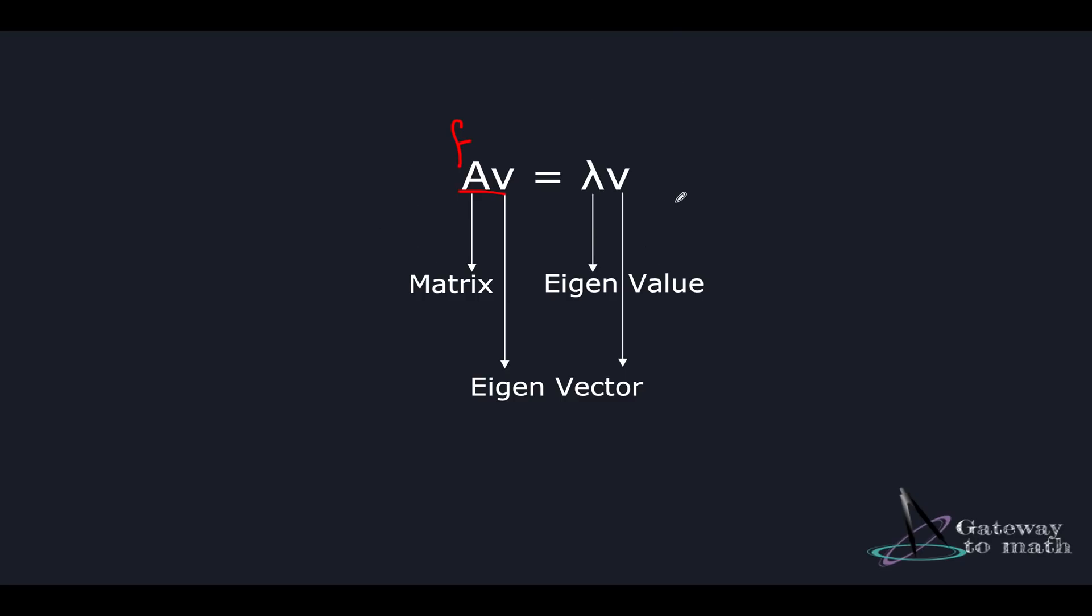This equation simply means that when a transformation is performed on an eigenvector V, it's only multiplied by a scalar lambda value and there's no change in the direction. Wait what? Did you just say an eigenvector is a vector whose direction does not change when you pass the vector through a function? Yes, that's precisely what I said.